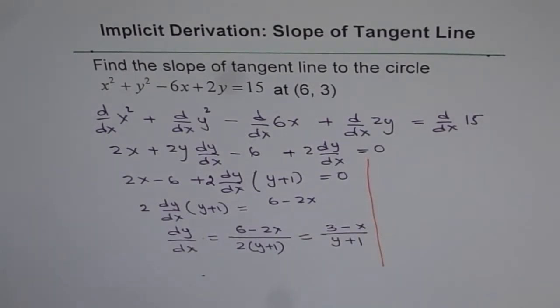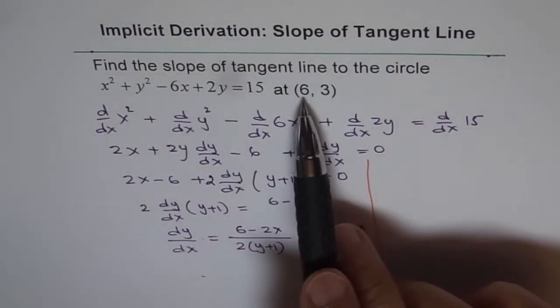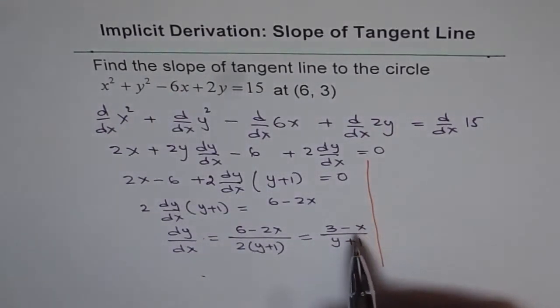Now, we need to find the slope of tangent line to the circle at (6, 3). So I can substitute 6 and 3 here and find my answer.